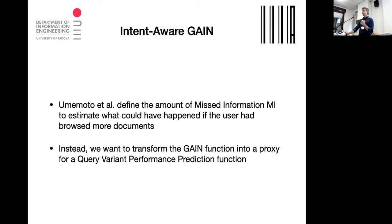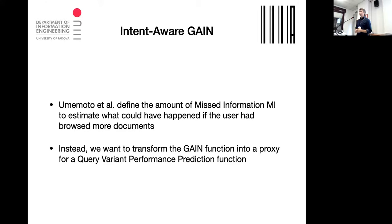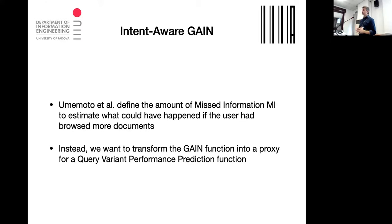We started from this and thought: can we use this formula as a proxy for query performance prediction? In the Scent Bar work, the amount of missing information was used to color those bars, showing what could happen if the user retrieved more documents. Instead, we want to use the same information to predict whether one reformulation is more likely to be more accurate than the others, according to some measure.